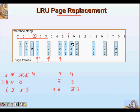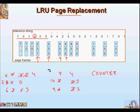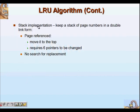Page two comes again and it's not there; least recently used is page three, so two comes in with time nine, giving us two, four, and zero. Then page three comes — it's not there; we replace and get page three with time ten, giving us four, three, and two. You can keep on going. This is the LRU page replacement with counter-based implementation, where we copy the time instant for each page access.